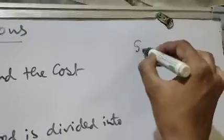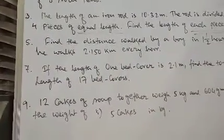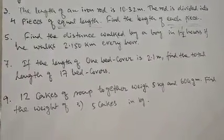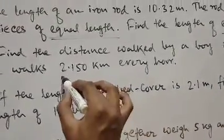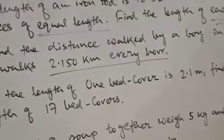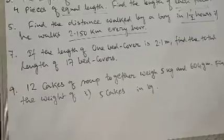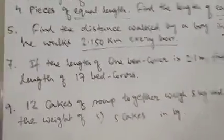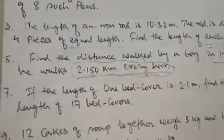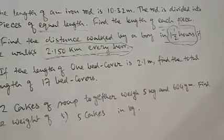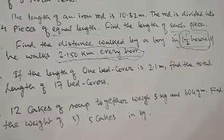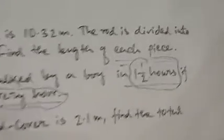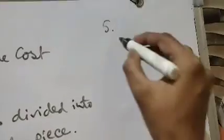Question number five: find the distance walked by a boy in one and a half hours if he walks 2.150 kilometers every hour. The boy's walking speed is 2.150 kilometers per hour, and the time is one and a half hours. We have to find the distance, so we will multiply speed into time to get the total distance.